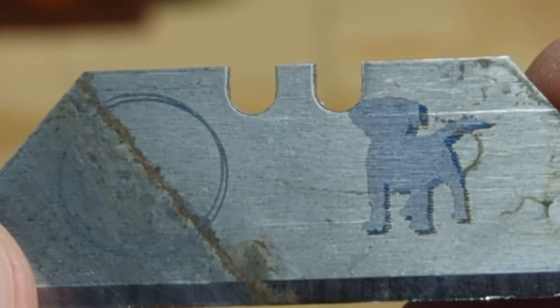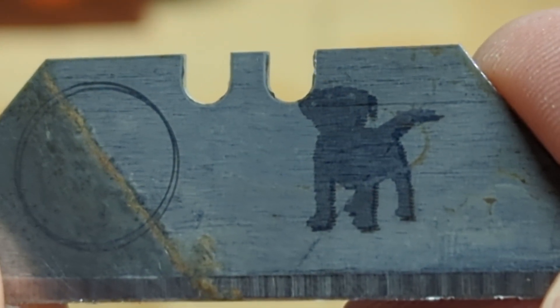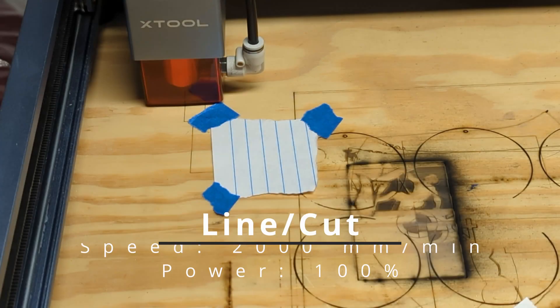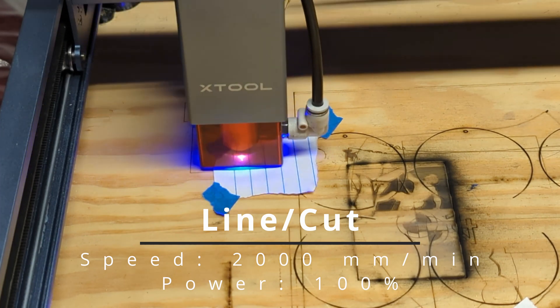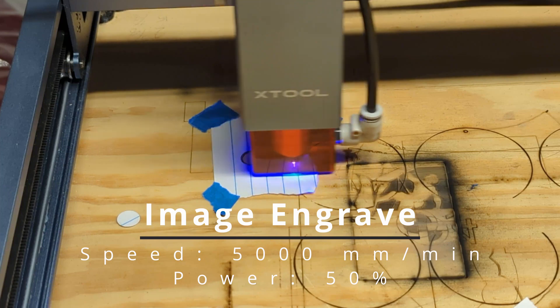Next up we have some plain old notebook paper. This one was really satisfying just because of how clean it cut and watching that little circle of paper come out.